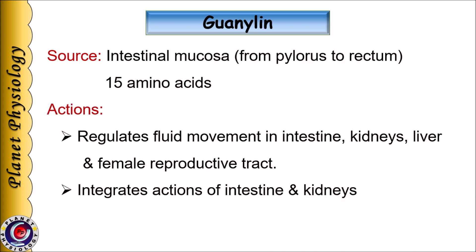The last hormone is guanylin. It is secreted by intestinal mucosa right from the pylorus to the rectum and has 15 amino acids. Guanylin regulates fluid movements in the intestine as well as other tissues like the kidneys, liver, and female reproductive tract, and basically integrates the actions of the intestine and kidneys. So here we finish with the gastrointestinal hormones.